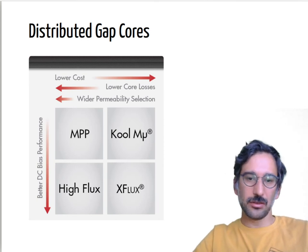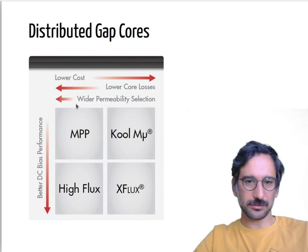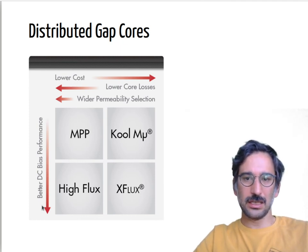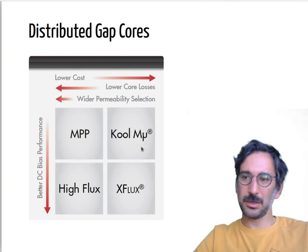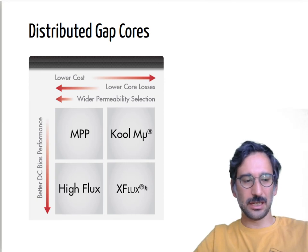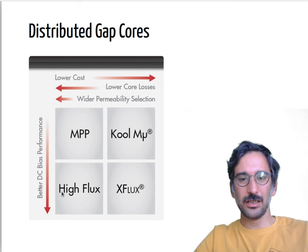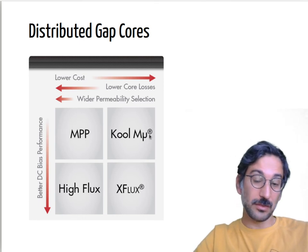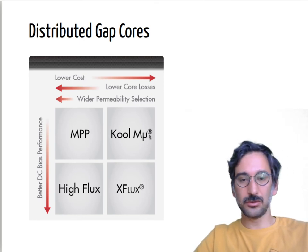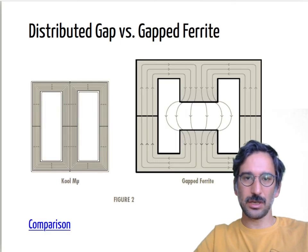Different powder core materials have different advantages in terms of cost, core losses, and DC bias performance. MPP, Kool Mµ, High Flux, and XFlux are different types — you need to choose based on your application and performance criteria.